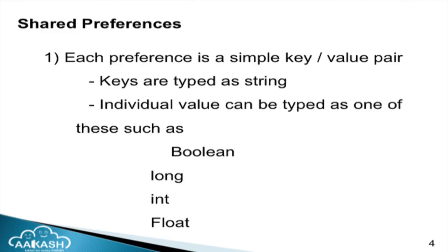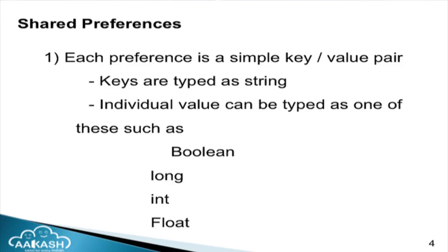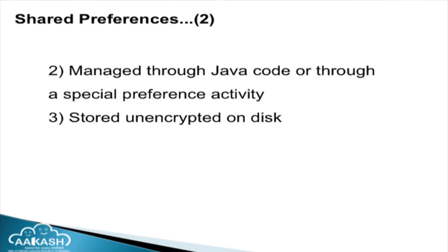We will start with the first storage option: shared preferences. Shared preferences is used when we need to save persistent data. Each preference has a key-value pair — the key is a string and the value can be any type: Boolean, long, float, or int. This is very important: each preference is a simple key-value pair where the key is a string and the value could be Boolean, long, int, or float.